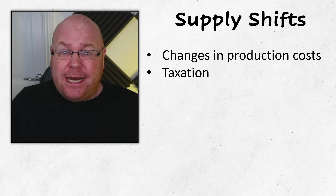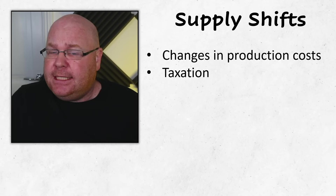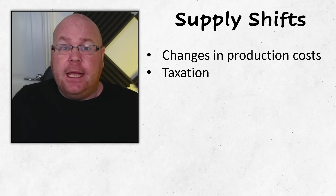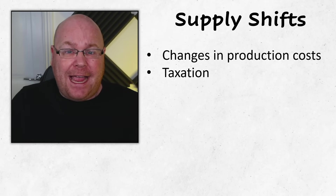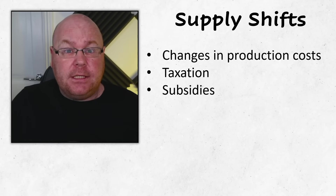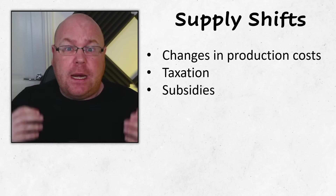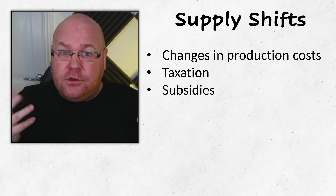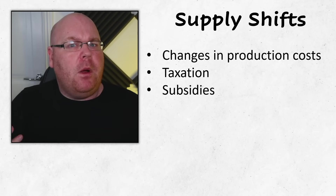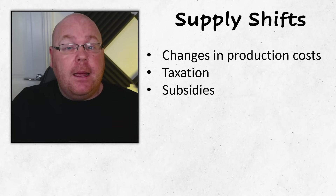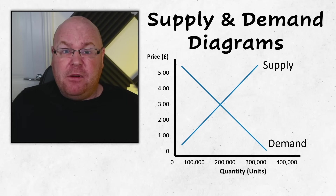A similar scenario applies to taxation. When the government increases taxes or duties on a firm it makes it less attractive to produce that product, but when taxes are reduced more entrants might flood into the market. We can also add subsidies to the list of factors affecting willingness to supply. When the government pays producers a subsidy to produce a good, entrepreneurs want to manufacture more of it. But when those subsidies are reduced or disappear altogether, the willingness of firms to supply that good may be negatively affected.